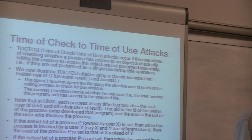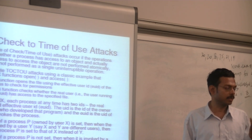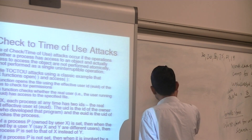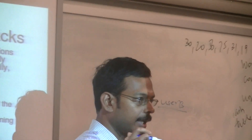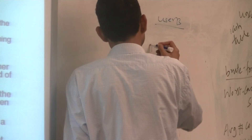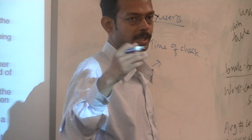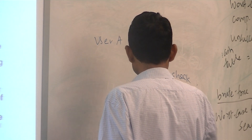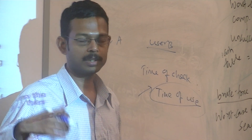Only when user B closes the file and reopens it, he won't be able to write the file, because when permissions are checked at that time, they will have been removed. So the first case: when user A has given permission for user B to write the file, user B opens the file and writes it. At the time of opening, user B has permission — that's the time of check. At the time of actually writing to the file — the time of use — the operating system doesn't check whether the user has the right permission, because it already checked and the user had it. It assumes the permission still exists.